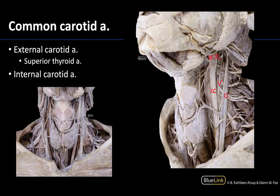There is one main distinct difference that will tell you which terminal branch is which. The internal carotid artery has no branches in the neck — so if you have one of the two terminal branches of the common carotid and it has no branches, you're looking at the internal carotid. Whereas the external carotid is going to have numerous branches, which you can see all over this region. One of those branches will be the superior thyroid artery, which you can see descending to the superior portion of the thyroid gland.